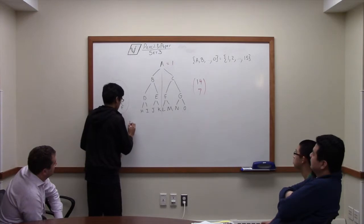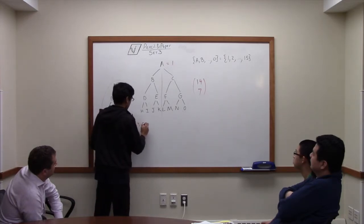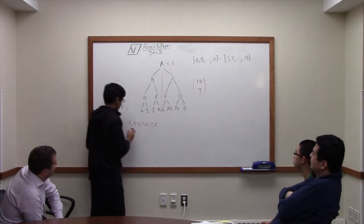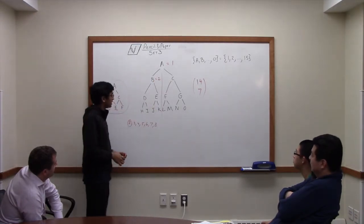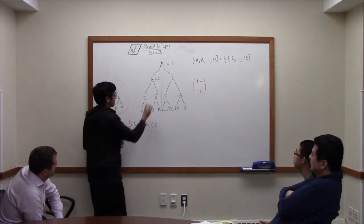So let's suppose that we pick 2, 3, 4, 5, 6, 7, 8. So this has to be D. Right?